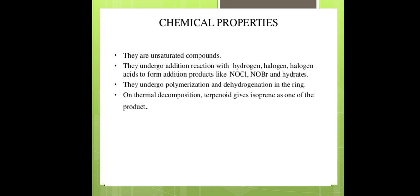The chemical properties of terpenoids: they are unsaturated compounds. They undergo addition reactions with hydrogen, halogens, and halogen acids to form addition products like NOCl, NOBr, and hydrates. They also undergo polymerization and dehydrogenation reactions. On thermal decomposition, terpenoids yield isoprene as one of the products.